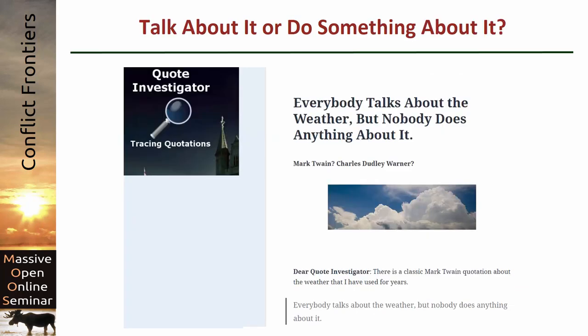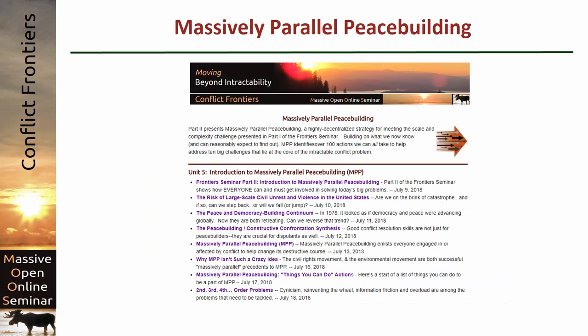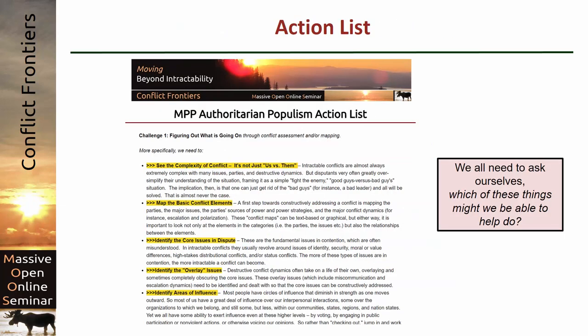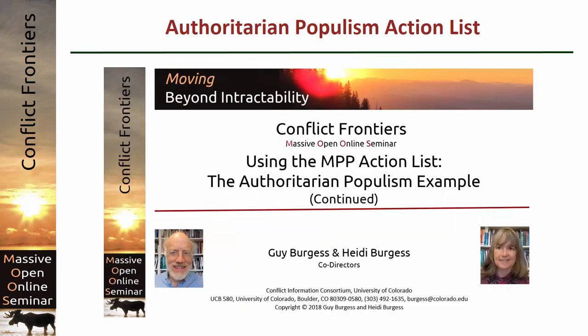Whenever I talk about something like this, I have a strange flashback to a quote attributed to Mark Twain — though the real person to say it first was a guy named Charles Warner. The line is: everybody talks about the weather, but nobody does anything about it. The truth is, everybody's talking in one way or another about this authoritarian populism problem, but not many people are doing anything about it, except maybe trying to mobilize the base for their side to win the next election. We need to get past that, and that's what we're trying to do with massively parallel peacebuilding. In the next post, we're going to go through the action list and try to highlight just a few of the things that really have to be dealt with if we're going to get a handle on this authoritarian populism problem.